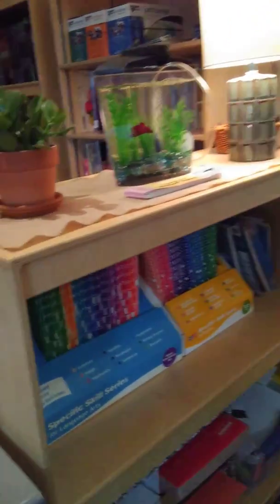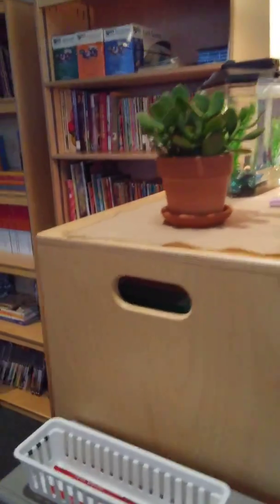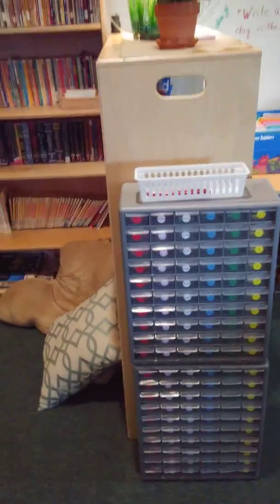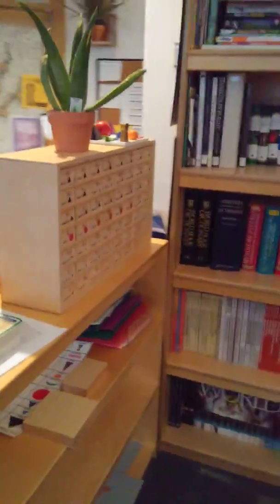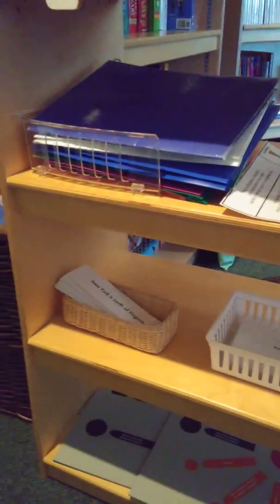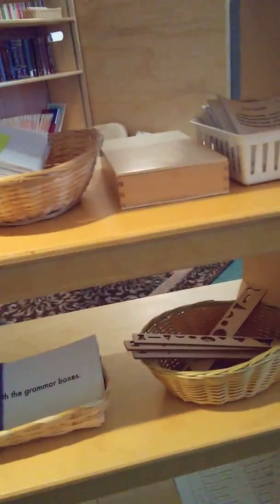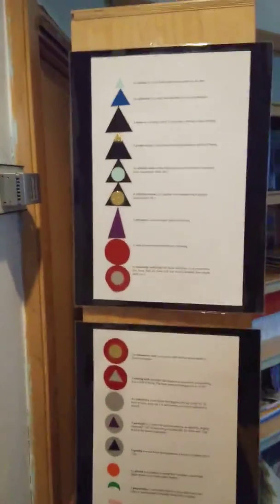We have our language shelf and area where we do SRAs and different activities for grammar and comprehension skills. We have the grammar towers and the grammar boxes, and then the different control of errors for the different activities. We have some of the materials used for grammar symbols — from reading analysis and syntax, to sentence analysis, to different opportunities for the kids to do some language activities.